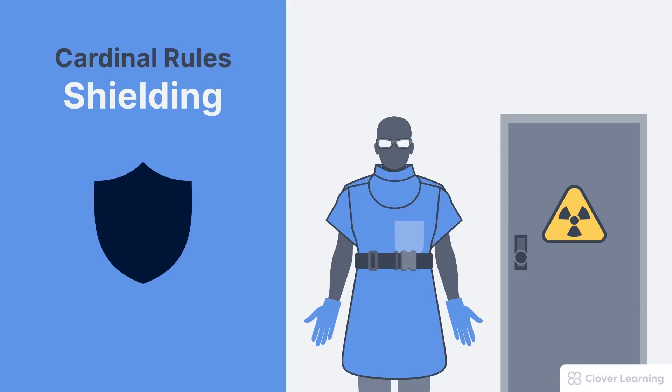Aprons, gloves, leaded glasses, and thyroid shields are commonly worn by operators. Even walls and doors of x-ray rooms have shielding to protect people outside of the room.